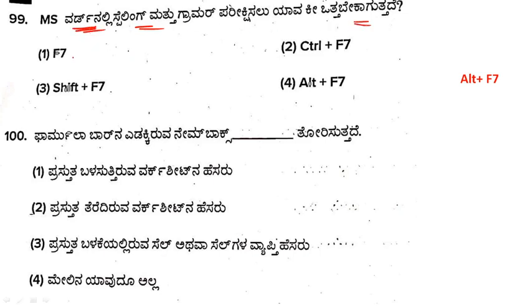MS Word spelling and grammar — F7 or Alt+F7. F7 is used to check spelling and grammar in MS Word.